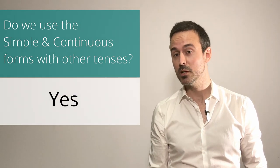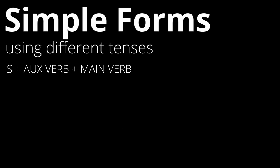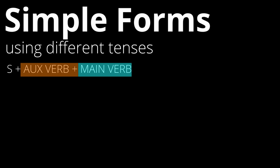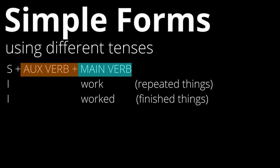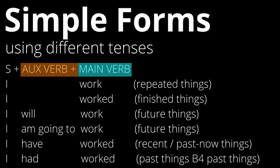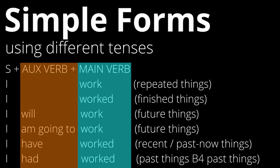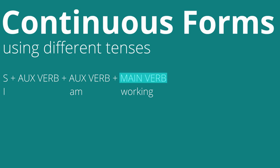We also use the simple and continuous forms in the future, past, and present perfect. Simple tenses always have one main verb and might have an auxiliary verb. For example: I work, I worked, I will work — where 'will' is the auxiliary verb — I am going to work, I have worked, or I had worked. Continuous tenses always have one main verb in the -ing form, and they always have an auxiliary verb before it, which is the be verb.